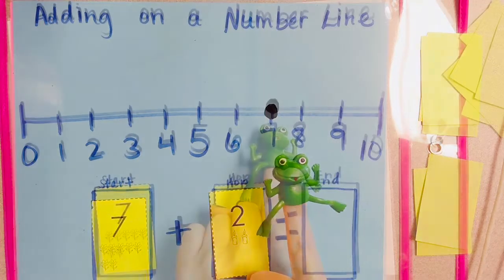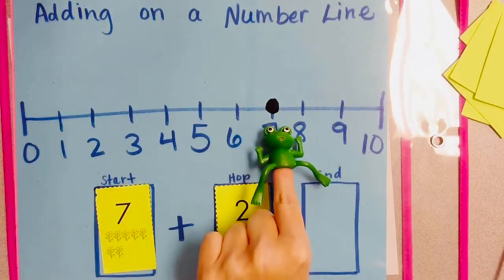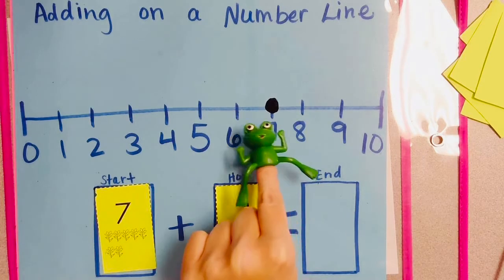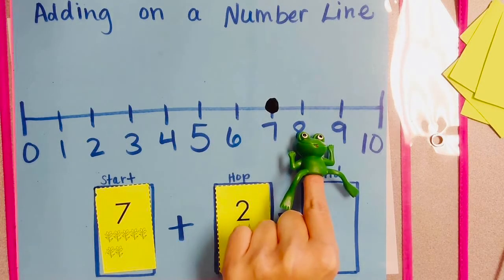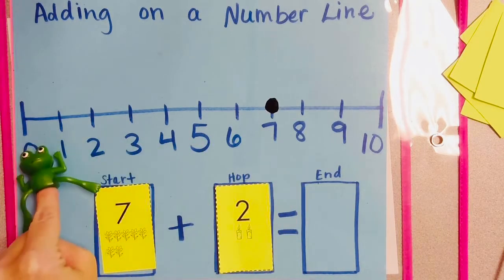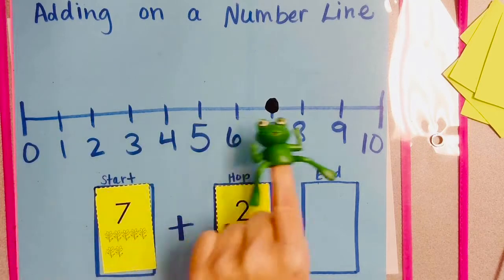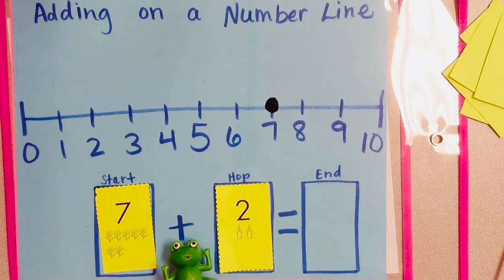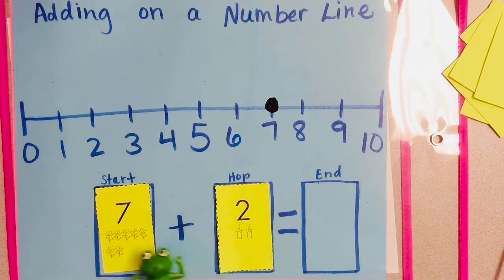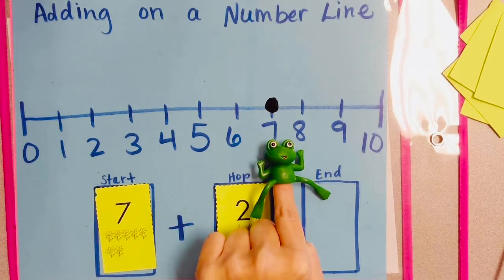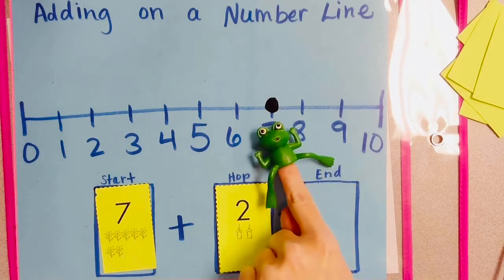Are you ready to hop with Mr. Frog? Mr. Frog knows where to start, but he doesn't know where to hop. Do you know which direction he needs to hop? Should he go backward, where the numbers get smaller? Or forwards, where the numbers get greater? Well, this addition sign shows me that the numbers are going to get greater because we're adding them together. So we need to hop forwards.